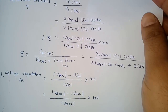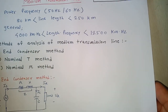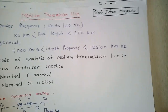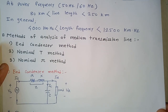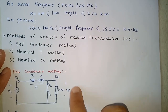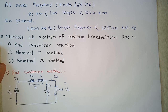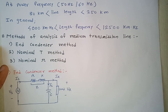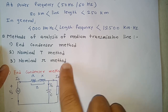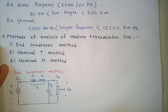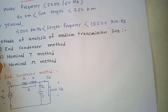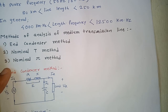In summary, the end condenser method places the capacitor at the receiving end. We derived the circuit diagram, phasor diagram, and all key equations for sending end voltage, current, power factor, efficiency, and voltage regulation. Practically, the nominal pi method is preferred over the end condenser method as it gives more accurate results.